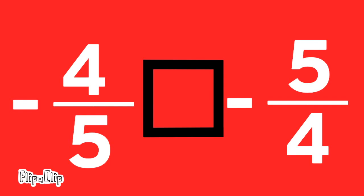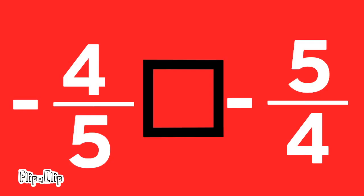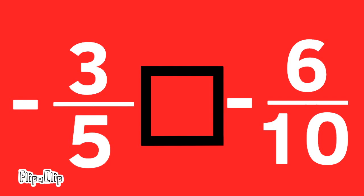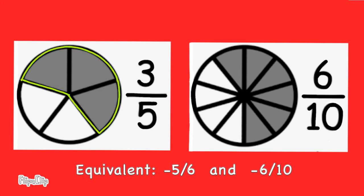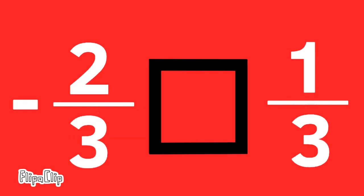Negative 4 fifths compared to negative 5 fourths. Negative 4 fifths is to the right of negative 1 on the number line, and negative 5 fourths is to the left of negative 1 on the number line. Therefore, negative 4 fifths is greater than negative 5 fourths. Negative 3 fifths compared to negative 6 tenths. These are equivalent fractions, so negative 3 fifths is equal to negative 6 tenths. Negative 2 thirds compared to 1 third. Negative 2 thirds is less than 0, and 1 third is greater than 0. Negative 2 thirds is less than 1 third.